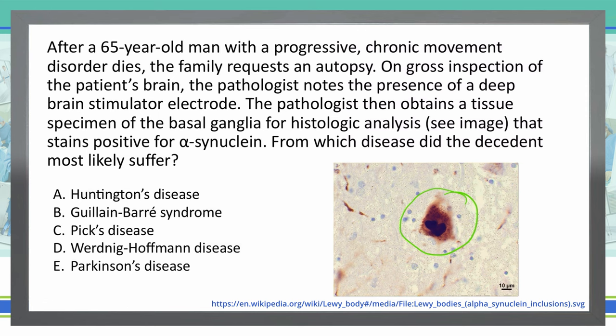Here are a couple of things we need to note before we start eliminating. We're talking about a 65-year-old man with a progressive chronic movement disorder — that's a very big key in this question. He did have a deep brain stimulator, and we see alpha-synuclein in a basal ganglia histological slide. Those are the main things; the rest is just filler.